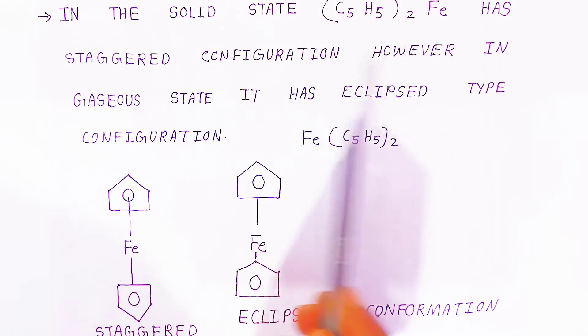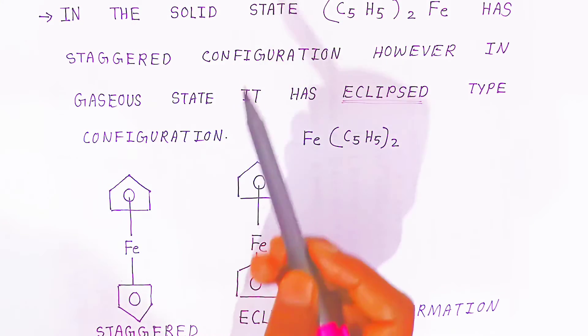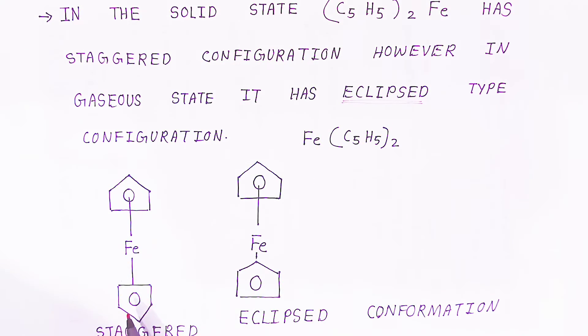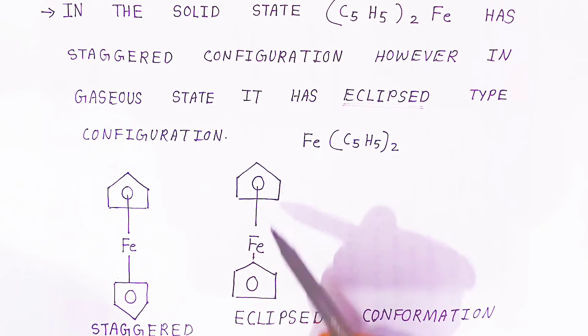However, in gaseous state you are getting eclipsed type of configuration. That means ferrocene has two types: staggered form as well as eclipsed form. In staggered form, they are in opposite direction - one is above, one will be below, and iron will be sandwiched between these two cyclopentadienyl rings.